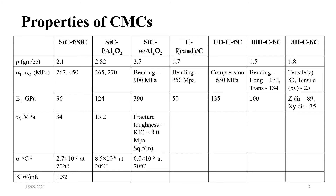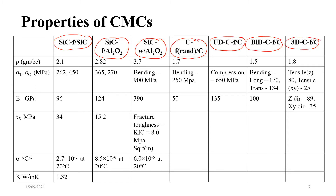Here is a comparison of different types of ceramic matrix composites: SiCf/SiC (silicon carbide fiber reinforced silicon carbide matrix), SiCf/Al₂O₃ (silicon carbide fiber reinforced alumina matrix), SiC whisker reinforced alumina matrix, random-oriented carbon fibers in carbon matrix, unidirectional carbon fiber in carbon matrix, bidirectional carbon fiber in carbon matrix, and three-dimensional carbon fiber in carbon matrix.